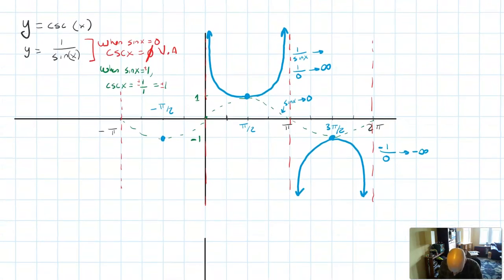What I've just drawn here is one full period of the graph of cosecant. Notice that one period is actually two branches of the graph, is two pieces.